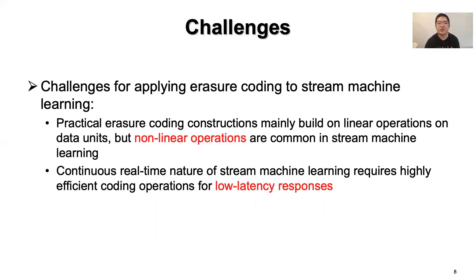Making erasure coding effective for stream machine learning is non-trivial. First, practical erasure coding constructions mainly build on linear operations on data units, but nonlinear operations are also common in stream machine learning, meaning that any erasure coding solution must support both linear and nonlinear operations. Second, while the computational overhead of erasure coding is less of a concern in storage compared to the more dominant bandwidth and I/O constraints, the continuous real-time nature of stream machine learning requires highly efficient coding operations for low-latency response.